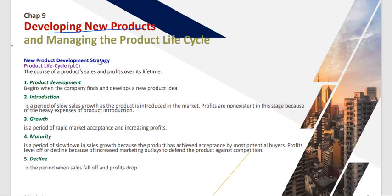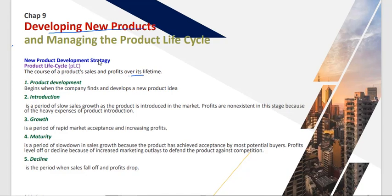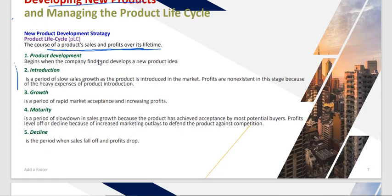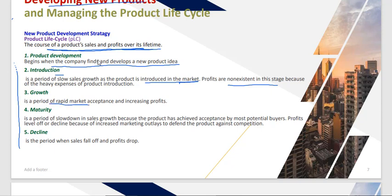The product life cycle is the course of a product's sales and profits over its lifetime. There are four to five stages. First is product development, where the company finds and develops the new product. Second is introduction — a period of slow sales as the product is introduced in the market, with profits non-existent due to heavy introduction expenses. Third is the growth phase — a period of rapid market acceptance and increasing profits.